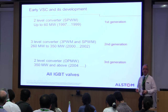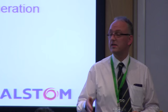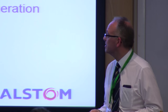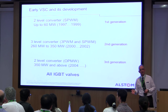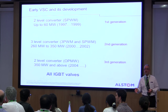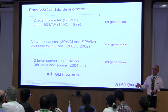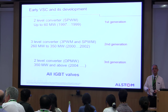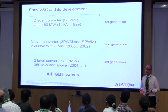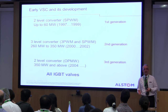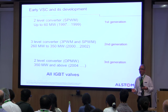The three-level converter dropped out of favour because of control complexity and we went back to two-level converters — but using optimal pulse width modulation, which means using a lower switching frequency to reduce switching losses, while accepting that you generate some harmonics into the power system and using passive filtering to remove them.